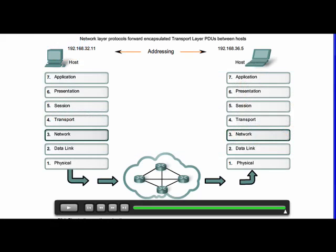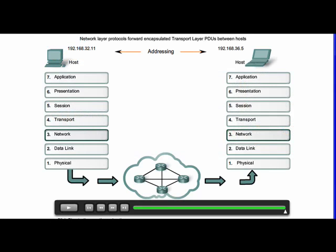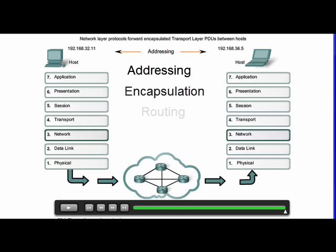The network layer, or OSI Layer 3, provides services for the exchange of data over the network between end devices. Layer 3 uses four basic processes: addressing, encapsulation, routing, and decapsulation.